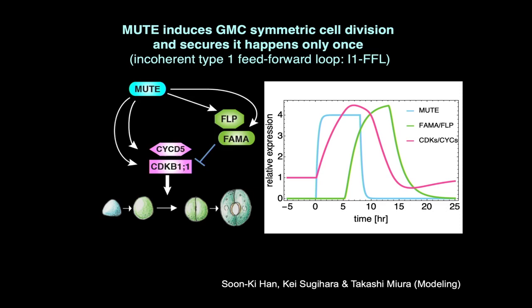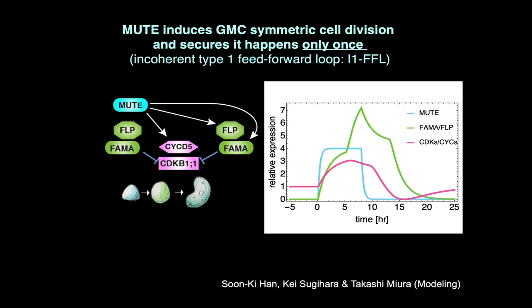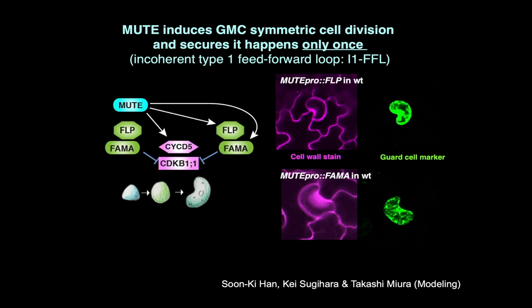To address that, we collaborated with mathematical modeling and theoretical biologists Takashi Miura and Kei Sugihara to test this hypothesis. For instance, if we precociously express FAMA and FOUR LIPS and inhibit expression of the cell cycle genes too early, we can reduce their expression level and inhibit the symmetric division. We tested this experimentally by introducing FAMA or FOUR LIPS under the mute promoter. When MUTE turns on to activate cell cycle regulators, these inhibitors also turn on to suppress them. If you do that, you end up with very cute kidney-bean-like stomata that skipped the cell division. And in the case of FOUR LIPS, its overexpression alone has no phenotype — it must be expressed in the right time and right place to show this effect.